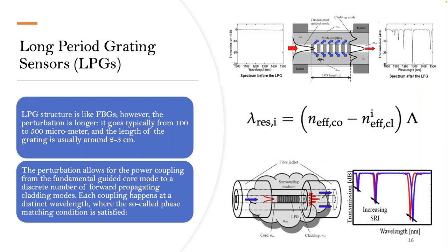The long period grating — LPG — has a similar structure to FBG. However, the perturbation period is much longer, typically from 100 to 500 micrometers, and the length of the grating is usually around two to three centimeters long. The perturbation allows power coupling from the fundamental guided core mode to a discrete number of forward propagating cladding modes. Each coupling happens at a distinct wavelength where the phase matching condition is satisfied, producing attenuations at specific wavelengths. The LPG is also a point or discrete sensor in this regard.